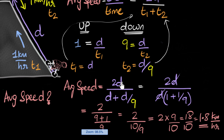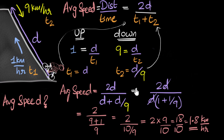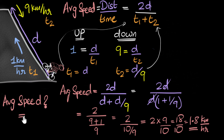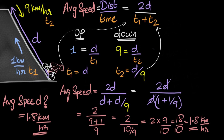And that is our answer. The average speed for the entire journey is 1.8 kilometers per hour. And we predicted this — the answer has to be less than five and closer to one because he spends more time traveling at one kilometer per hour. So what did we learn? We learned what not to do: the most common mistake is to add the speeds and divide by two. The best way to solve any problem involving average speed is to go by the formula — total distance divided by total time.